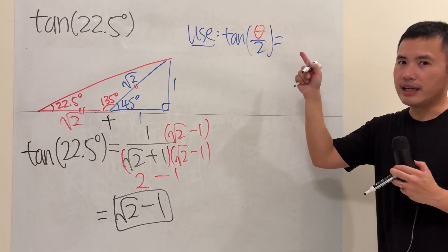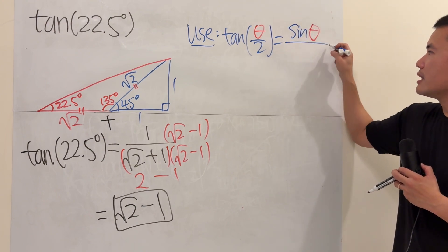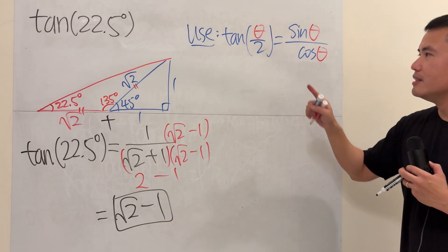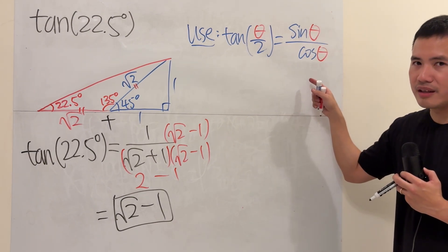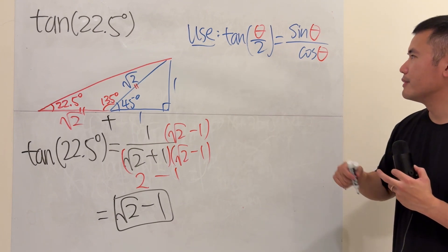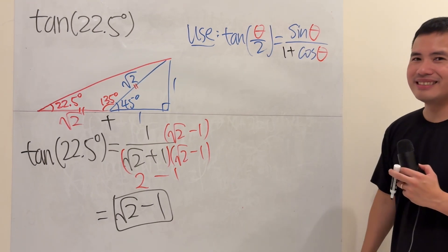This right here is equal to, this is pretty nice actually. On the top, you get sine theta. On the bottom, you get 1 plus cosine theta. But wait. This is just regular tangent theta. Here is tangent theta over 2. Don't worry. Just put 1 plus. This is really nice. Very nice.